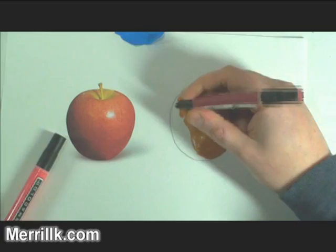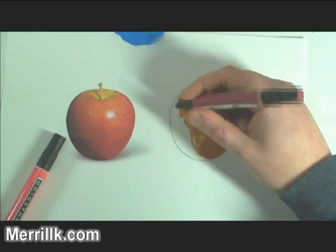I'm putting the green in on the top, and I'm going to start looking at that shadow on the side. And I'm going to fill it in with a darker red.